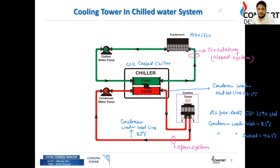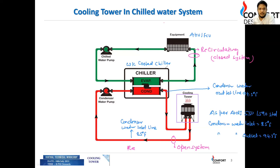Both sides are recirculating systems. In the chilled water loop, water from the chiller comes via the chilled water pump, goes to the evaporator or the cooling coil, and returns back — it recirculates. Similarly on the condenser water side, the water also recirculates, but that part is an open system.